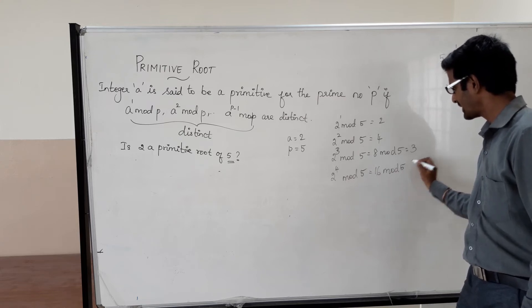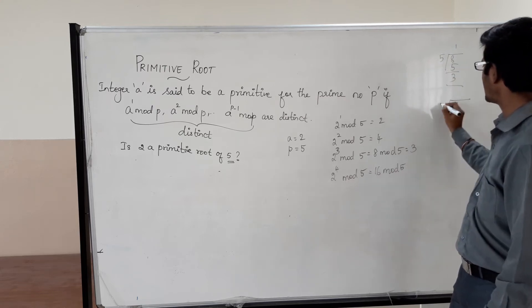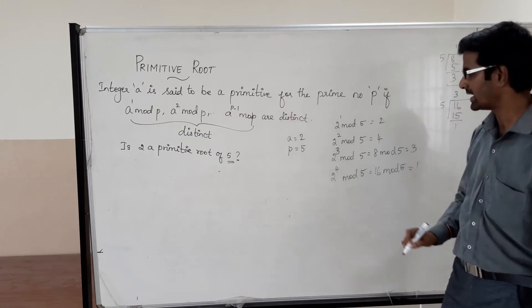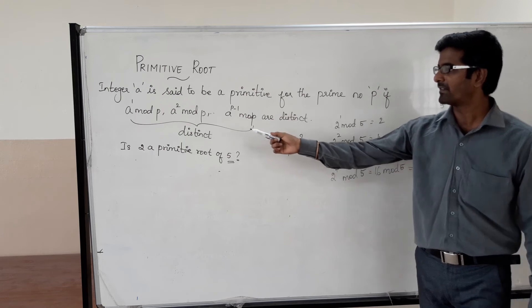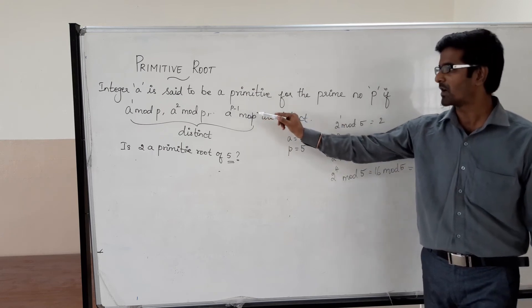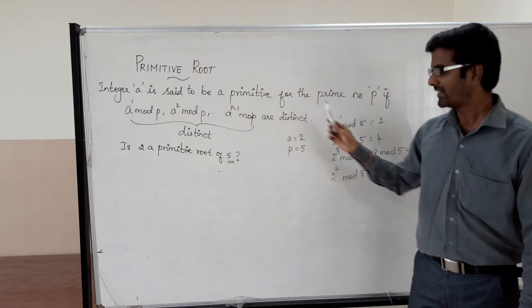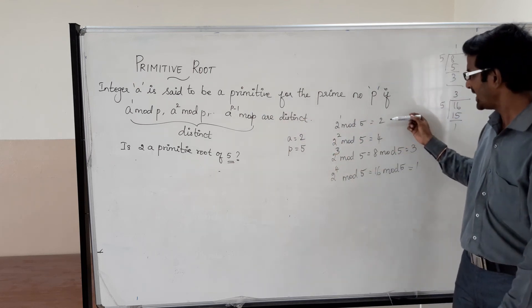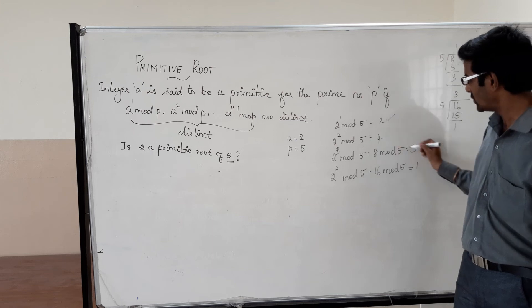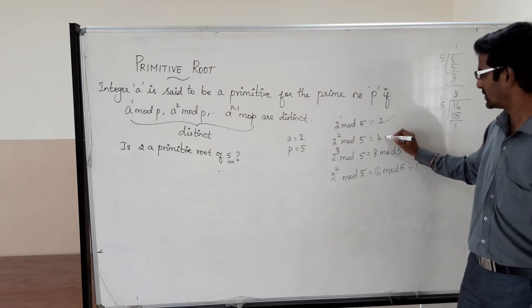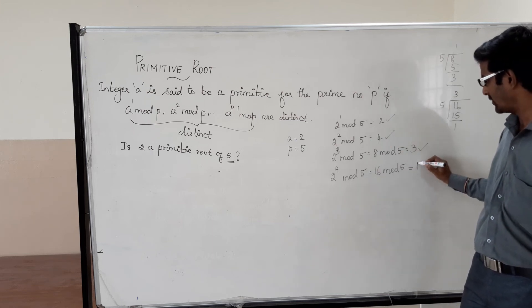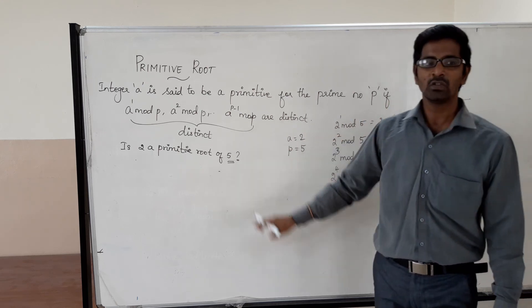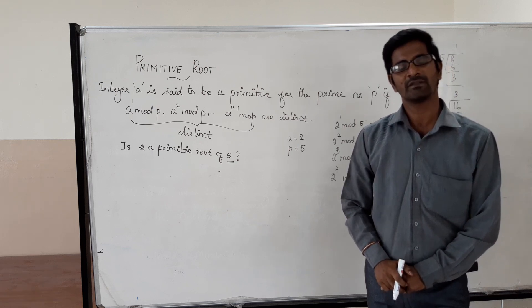And 2 power 4 is equal to 16; 16 mod 5 — 16 divided by 5, 3 times 15, and the remainder is 1. So we are applying a power 1 mod p, a power 2 mod p, up to a power p minus 1 mod p, and we have to check whether we are getting all the values as distinct. Yes, we are getting distinct values: 2, 4, 3, and 1. Since we are getting all distinct values, we can say 2 is the primitive root of 5.